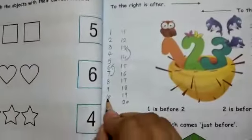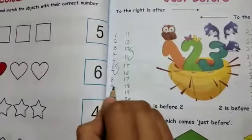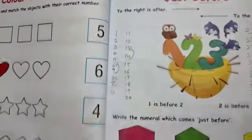Then next, 9. 1 to 10 mein 9 aata hai. Before number 9, 9 before is 8. Write down 8.